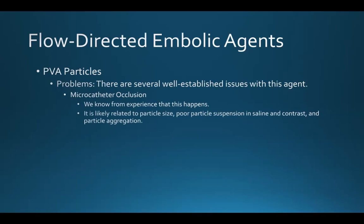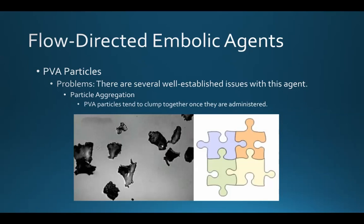Microcatheter occlusion is another potential issue when using particulate PVA, and we know from experience that this can happen. It's likely related to particle size, poor particle suspension in the saline and contrast mixture, and particle aggregation — which is the third well-established issue with particulate PVA. We know that PVA particles tend to clump together once administered. I like to use the analogy of jigsaw puzzle pieces: looking at the PVA particles, it's not too hard to imagine them finding ways to group together and become more aggregated, much like perfectly sized and configured jigsaw puzzle pieces.